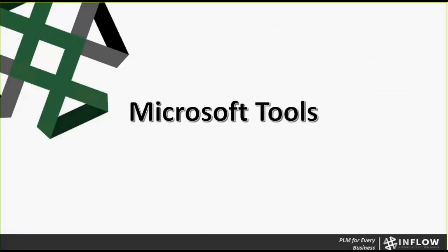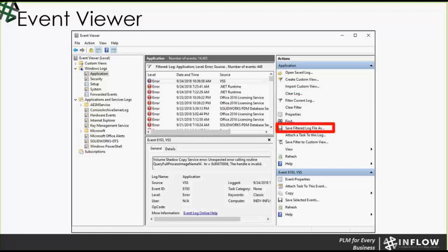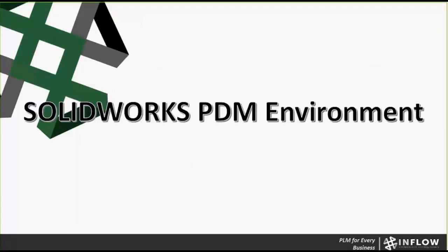Next, let's talk about Microsoft tools — there are a few that both the SOLIDWORKS side and the PDM technical support side use. The big one is the Event Viewer application logs. To find those, open your Windows Logs, go to the Application section, and you'll see errors and information you can filter. I often like to filter for error-specific entries, then save that filtered log out — that way, instead of sitting on the client machine running through errors, we can pull that log out, comb through it on our side, and let you get back to work.